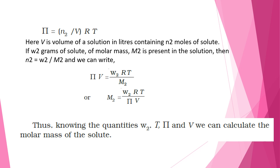Pi equals CRT, which equals (n₂/V)RT, where V is the volume of the solution in liters containing n₂ moles of the solute. Simplifying this formula, we get M₂ = w₂RT / (π·V), where M₂ is the molecular mass of the solute and w₂ is its mass. Thus, knowing w₂, T, π, and V, we can calculate the molar mass of the solute.